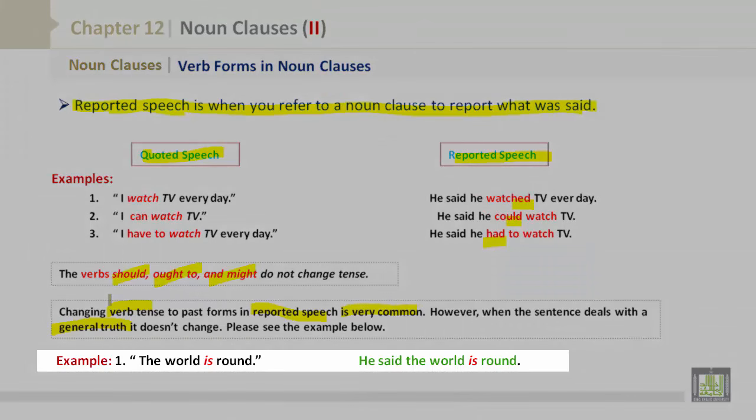Example number one: "The world is round." He said the world is round. You typically don't change it to past tense because "the world is round" is a general truth. You can keep the same tense.